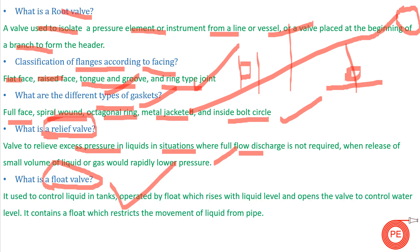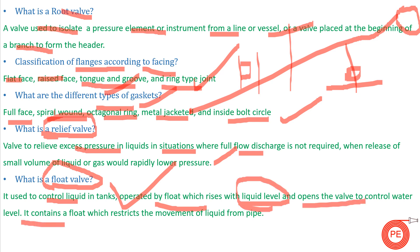The next question is: what is a float valve? A float valve has a float inside the system that rises when the liquid level rises, opening the valve to control the water level. When the liquid level drops, the float settles down, restricting the flow of liquid from the pipe.